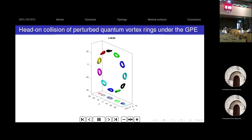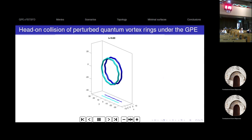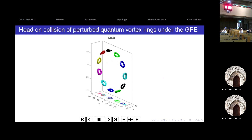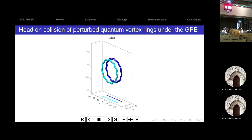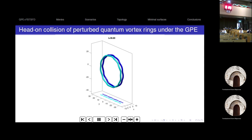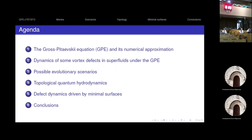I reproduced the head-on collision of two perturbed rings using the Gross-Pitaevskii equation. Of course the initial condition must be perturbed manually — otherwise, with just normal rings they will enlarge, slow down, and fade away. To produce small rings, you need to engineer the initial condition. I will spend the rest of my talk explaining how we got here, beginning with a few words about the Gross-Pitaevskii equation. I will show movies of defect dynamics, try to extract evolutionary scenarios, present topological quantities like writhe and twist, and then link the dynamics to minimal surfaces.